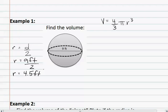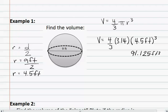We can now place this into the formula. Volume equals four-thirds pi, or 3.14, times radius, which was 4.5 feet cubed. We will now start by doing the radius cubed. The radius cubed is 91.125 feet cubed.